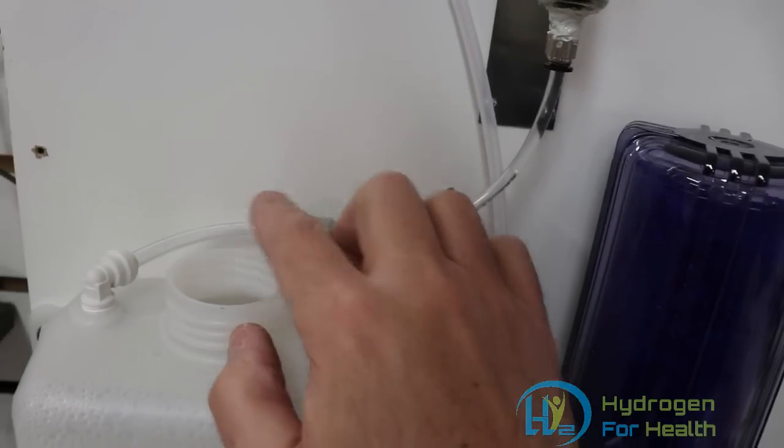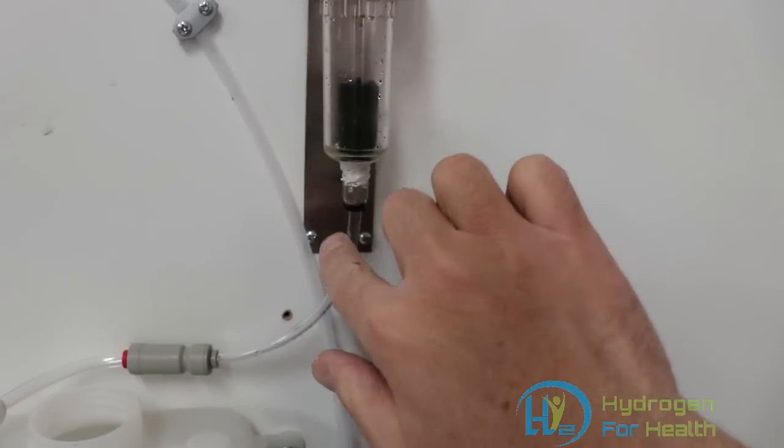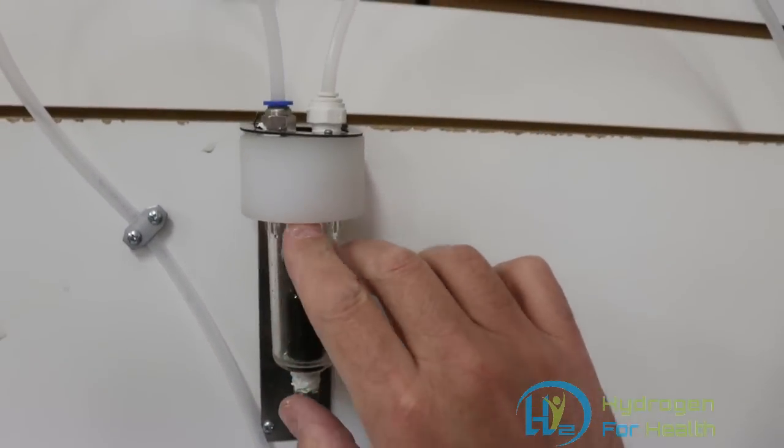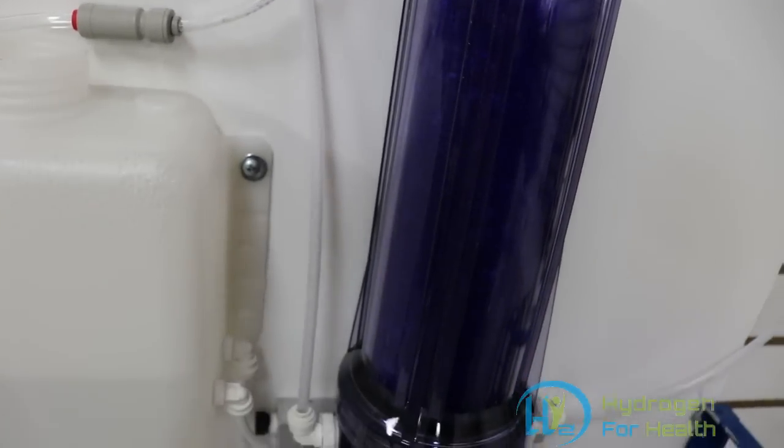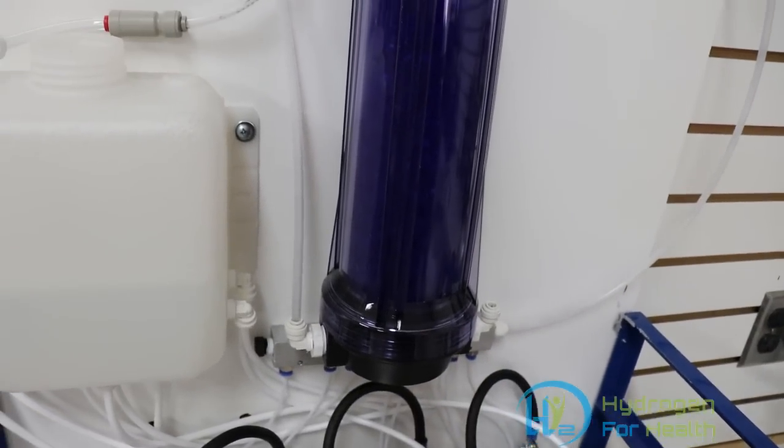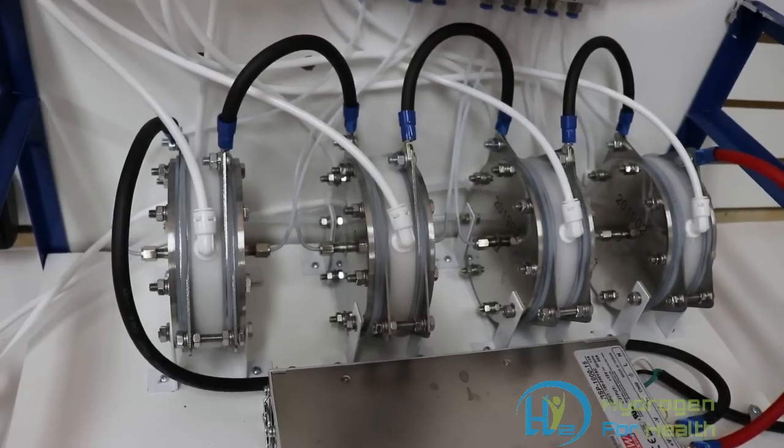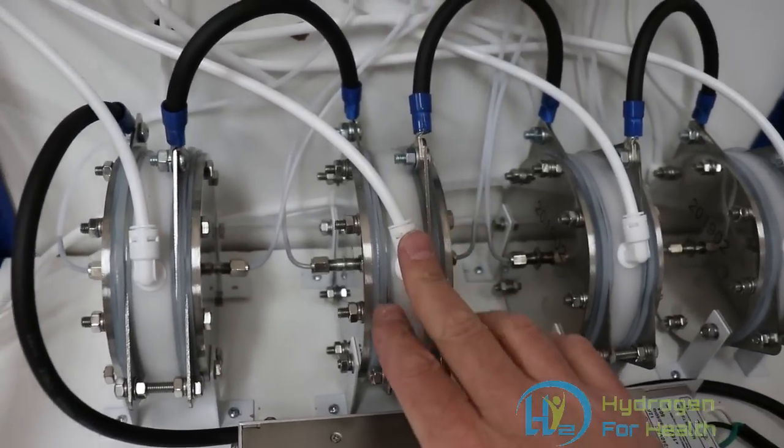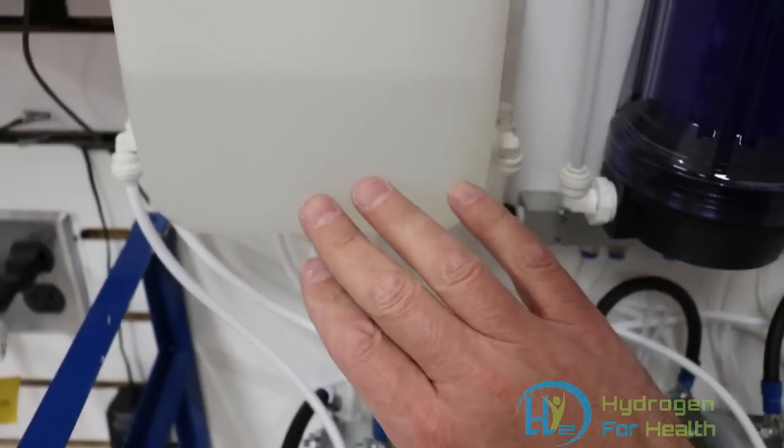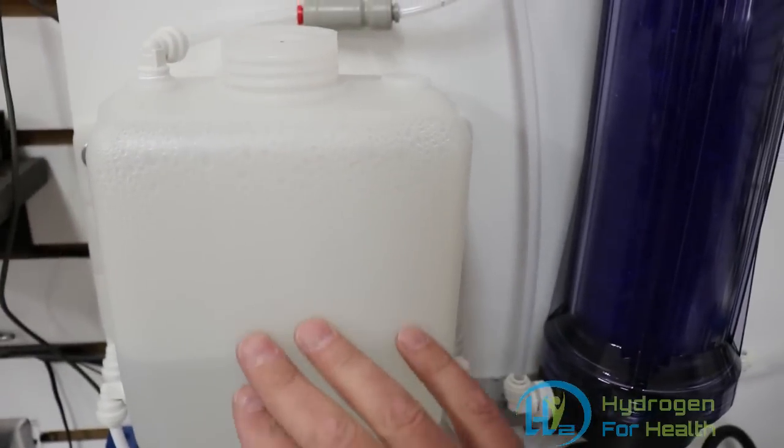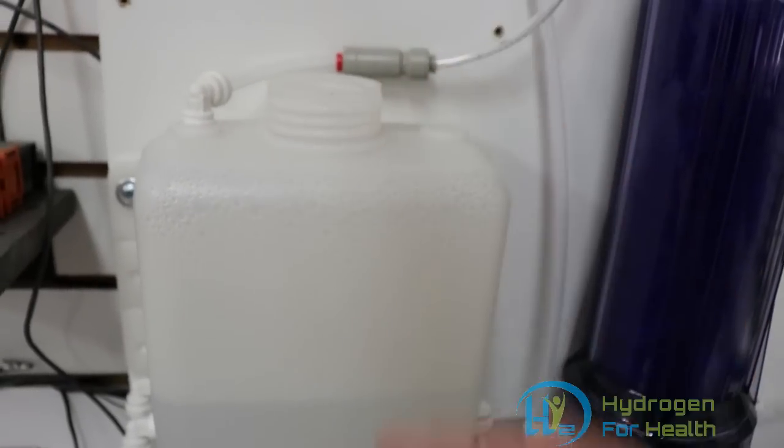Got a check valve here so that gases can't come back up into here and get into the line. You don't want any other gases in the line but hydrogen. One thing also, the oxygen that's made by these comes out these ports with the water and the oxygen will bubble up through this reservoir tank and just out the top.